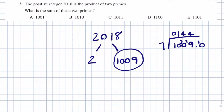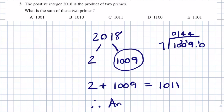We have 2 prime factors. The product is 2 times 1,009, but we need the sum. So the sum is 2 plus 1,009, which is 1,011, which is answer C. Therefore answer equals C.